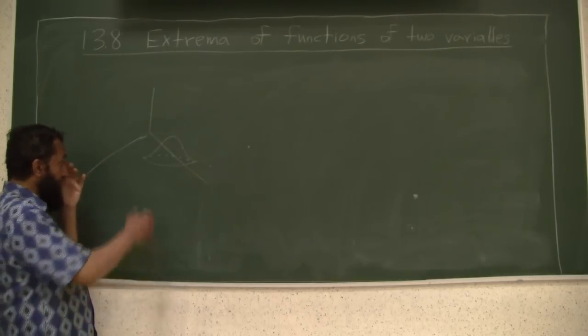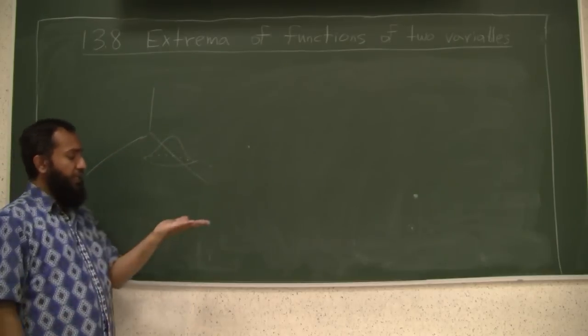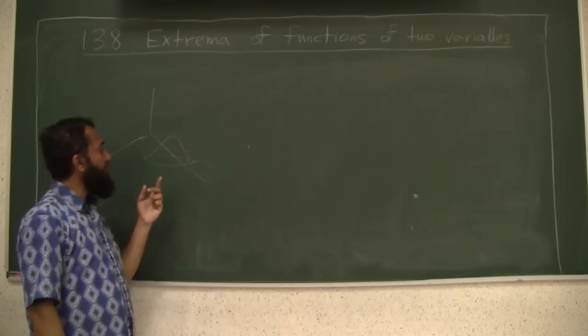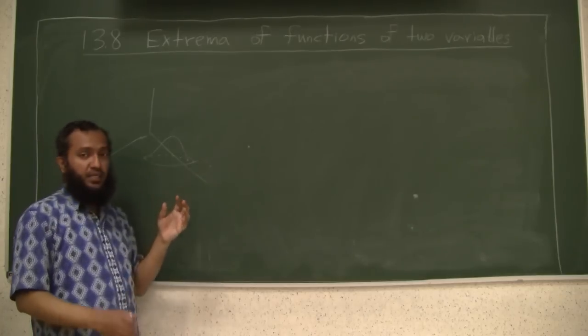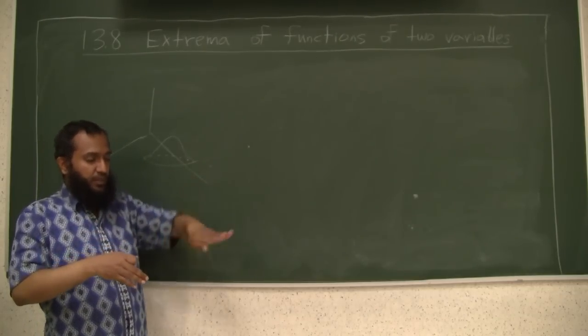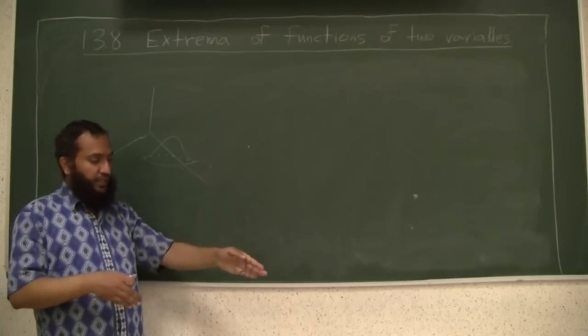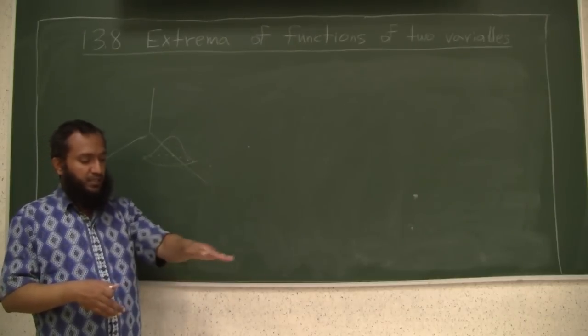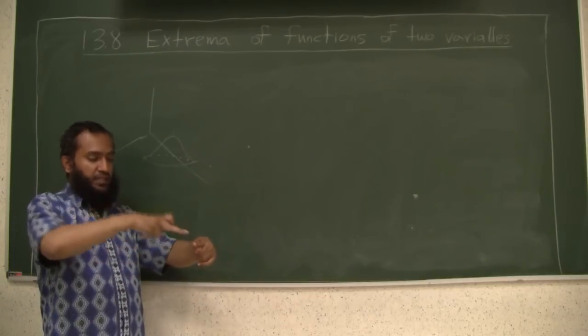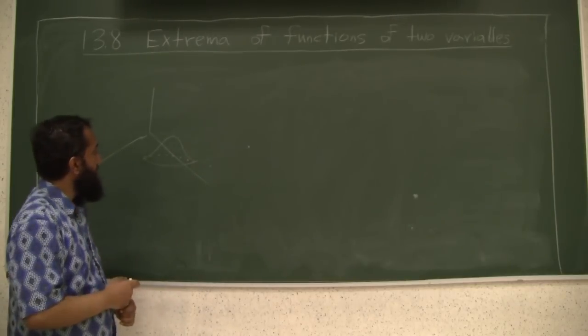And similarly, if it was the bottom of a valley, if you flip this picture upside down, again the tangent plane is horizontal. Now, if it doesn't have to be the maximum or minimum, it could also be a saddle point. We have seen the saddle function. So as this way is going up, and this way is going down, the derivative this way is 0, and the slope this way, the derivative is also 0. So the two derivatives are again 0.